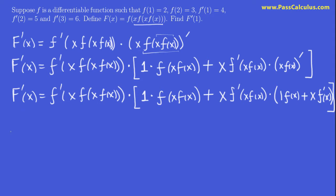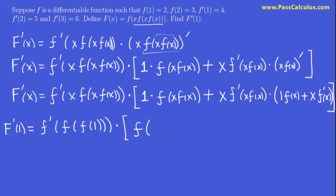What a mess, but now we're in a position to find F prime of 1. All I'm going to do is replace all occurrences of x by 1. Notice that 1 times something is just that thing, so I don't even really have to write the 1. Multiplying by 1 doesn't change anything, so I'm going to write f of 1 here, and 1 times this is just f of 1 as well.